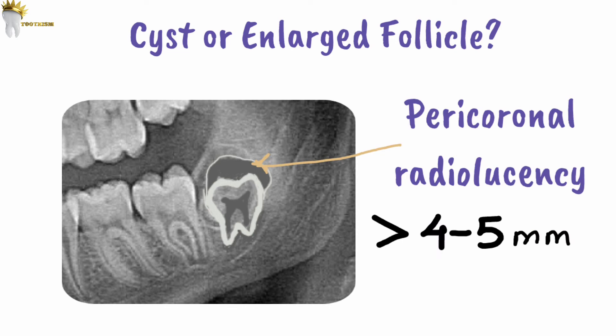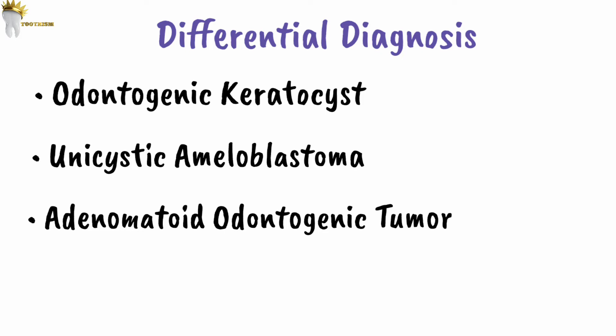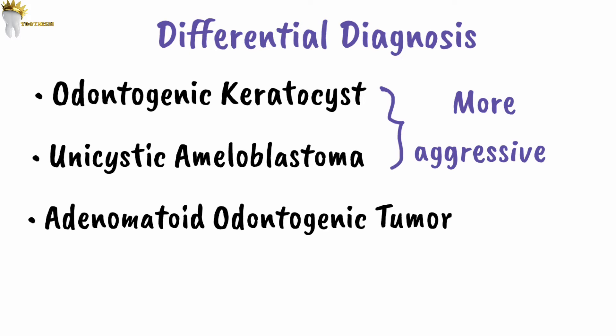To distinguish between an enlarged follicle and a cyst, it is recommended that if the pericoronal radiolucency is larger than 4 to 5 millimeters, it should be considered a cyst and sent for pathologic examination after removal. Clinical and radiographic features alone are not sufficient to diagnose dentigerous cyst — differential diagnosis must include odontogenic keratocyst (OKC), unicystic ameloblastoma, and adenomatoid odontogenic tumor, since treatment differs because OKC and ameloblastoma are more aggressive.